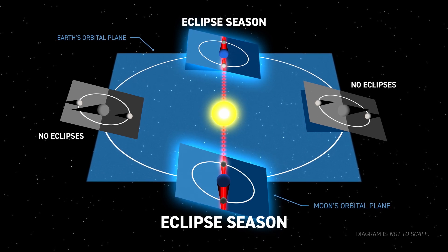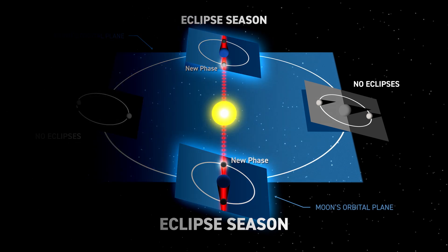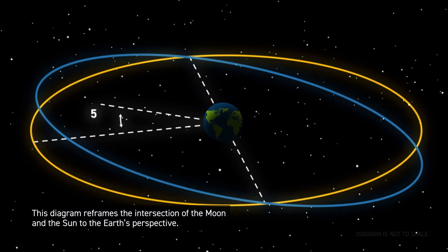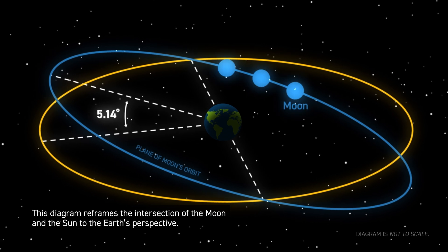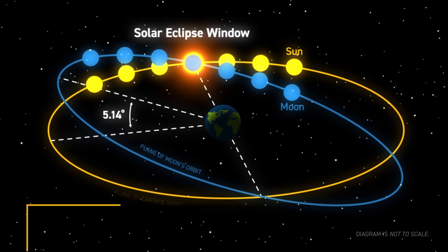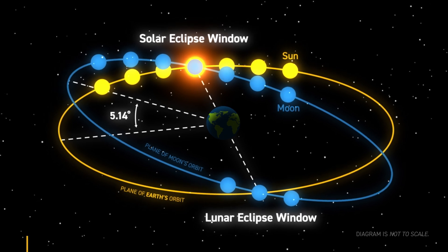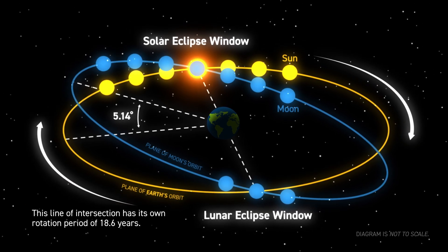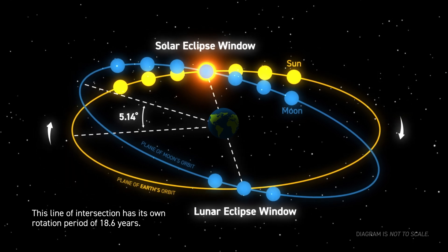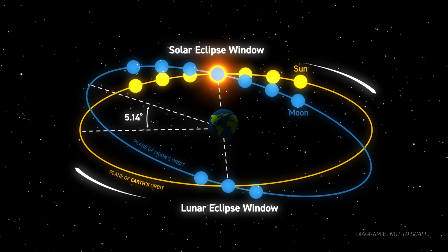During eclipse seasons, when the moon is between the sun and the earth, or in new phase, we will get a solar eclipse. The sun and moon have to be in the same place in our sky at the same time for an eclipse to occur. One of the things that makes it even more complicated is that the line created by the intersection of these two orbital planes has its own rotation period of 18.6 years, so when eclipse season occurs each year, it will slowly change from year to year.